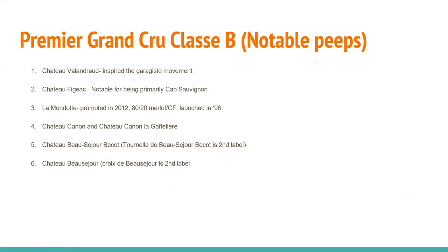Notable Premier Grand Cru Classé B wines that are super important: Valandraud, which inspired the Garagiste movement; Figeac, notable for being Cabernet Sauvignon-dominant; La Mondotte, promoted in 2012 and launched in 1996; Château Canon and Canon La Gaffelière; Beauséjour-Duffau-Lagarrosse and their second label Croix de Beauséjour; Beauséjour, with second label Croix de Beauséjour; and Trotanoy was also mentioned as a recent question.